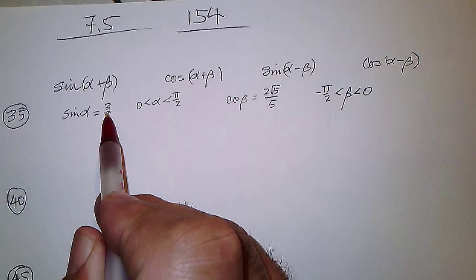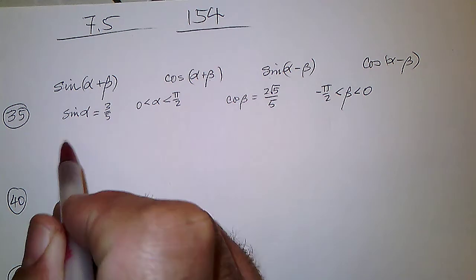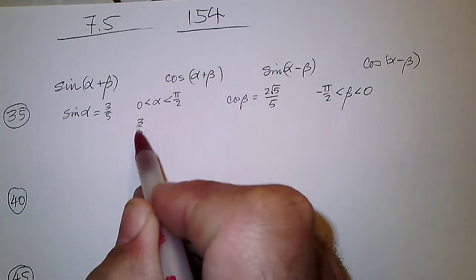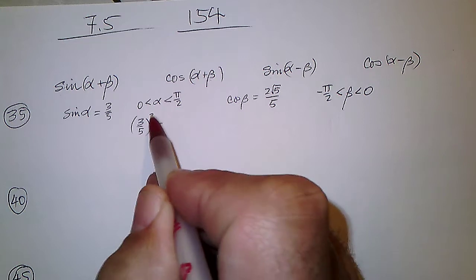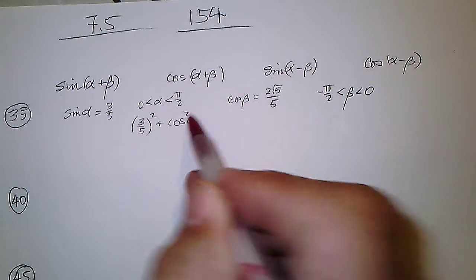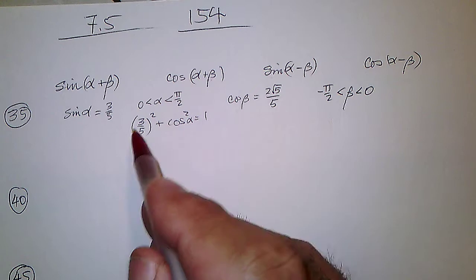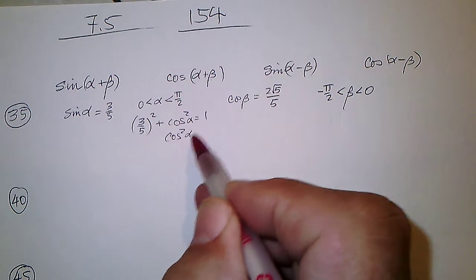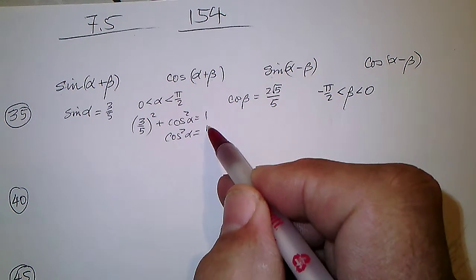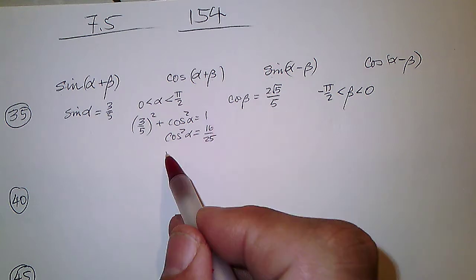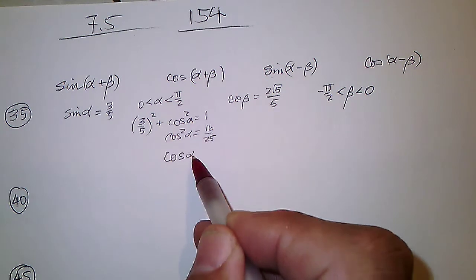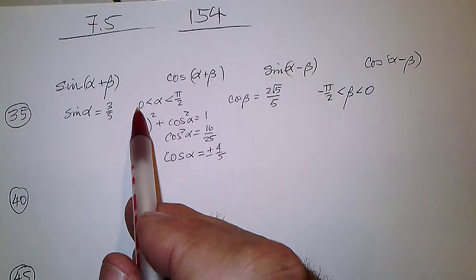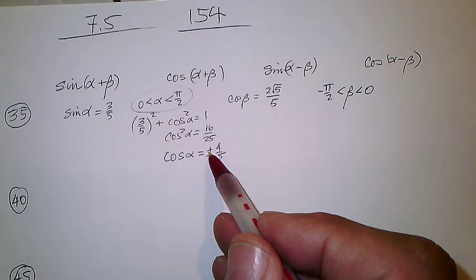It says the sine of alpha is 3 fifths. First, we have to figure out what the cosine is. Using sine squared plus cosine squared equals 1, that's 9 twenty-fifths from 25 twenty-fifths. Cosine squared alpha is 16 twenty-fifths, so cosine of alpha is plus or minus 4 fifths. Since we're in the first quadrant, we use the positive value.